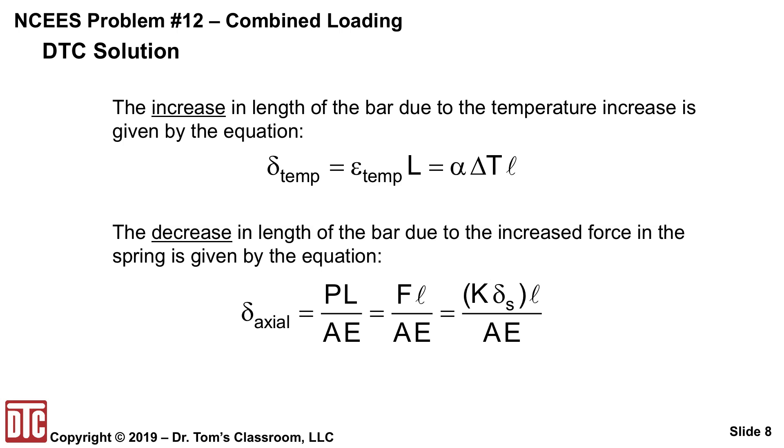And then the decrease in the length of the bar due to the increased force in the spring, because the bar's got longer, so the spring's gotten shorter, so it's got more force, is the axial loading equation PL over AE. In this case, the F, the force in the spring of the bar, times the script L over AE, and we can substitute that K delta S for the F, and so we get that term there on the right, K delta S L over AE as our delta axial.